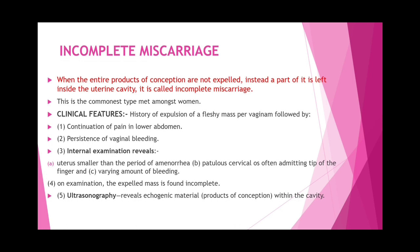Incomplete miscarriage means the entire products of conception are not expelled — part is left inside the uterine cavity. It is the commonest type seen among us. Clinical features: history of expulsion of fleshy mass per vagina followed by continuous lower abdominal pain, persistence of vaginal bleeding. Internal examination reveals uterus smaller than period of amenorrhea, cervical os admitting tip of finger, and varying amount of bleeding.